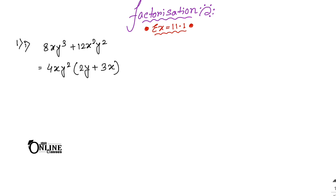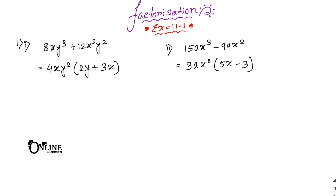Sum number 1.2: 15ax³ - 9ax². First find the HCF of 15 and 9, which is 3. Then 'a' is common, and x² is the smallest power of x. So write down 3ax². Inside the bracket: 5x minus 3. The answer is 3ax²(5x - 3).